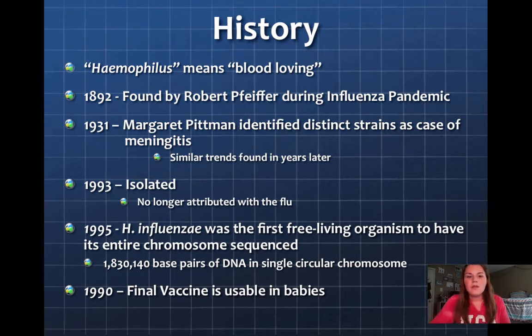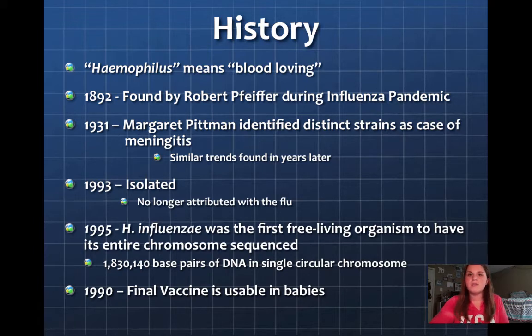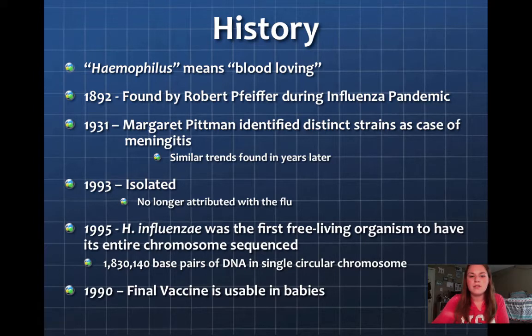In 1995, Haemophilus influenzae was the first free-living organism to have its entire chromosome sequenced, which is pretty cool. It has 1,830,140 base pairs of DNA in a single circular chromosome.